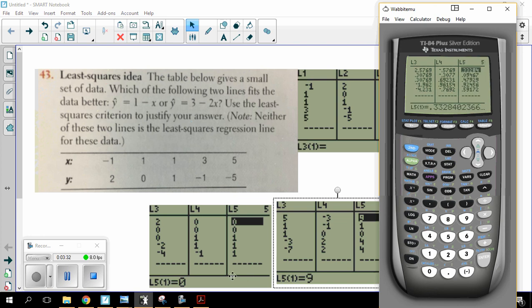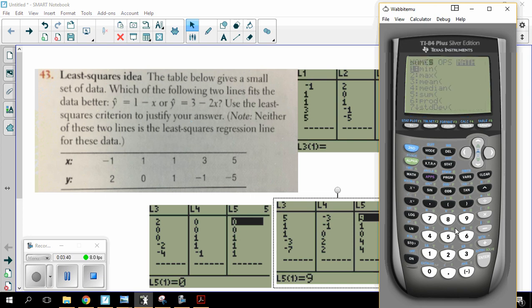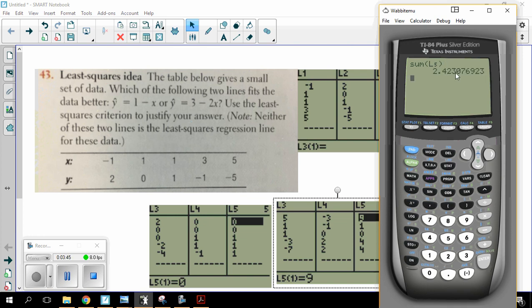Now, remember, the better of the two had a sum of the squares of the residuals equal to three. So let's see what the sum of the squares of the residuals is now less than three.